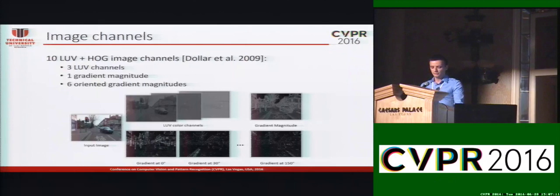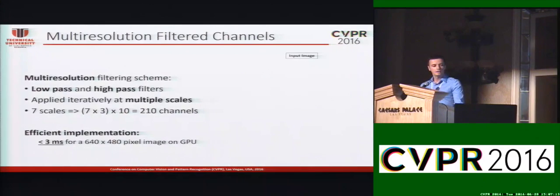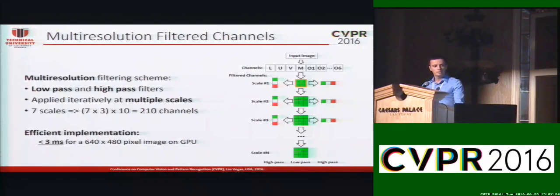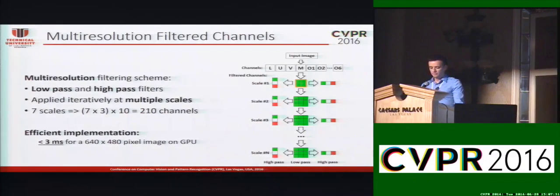In order to capture features at multiple scales, we propose the following multi-resolution filtering scheme. First, we apply a simple low-pass filter multiple times iteratively, and then we apply a vertical and horizontal difference at each scale as high-pass filterings. This way, we are able to achieve the filtering of 210 channels in less than 3 milliseconds using a GPU.